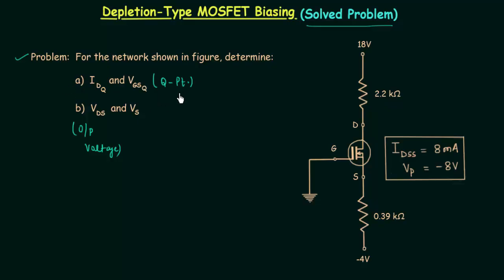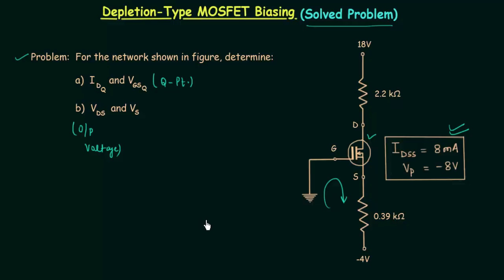To find the operating point we need two curves. The first one is the transfer curve of the device. The device is an N-channel depletion type MOSFET. The second curve is the straight line which is the load line, and we will obtain the load line once we apply KVL in the input loop.